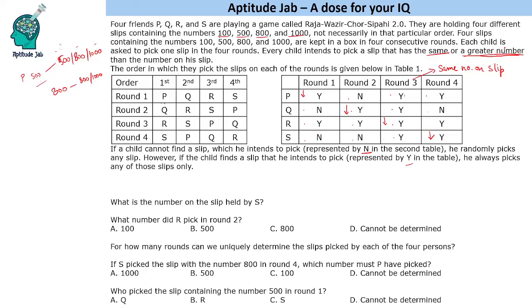Looking at R: R has Y in all rounds. Irrespective of whether R is the first, second, third, or fourth person to pick, R still gets Y in all rounds. This means R must have the least number. Logically, R's slip is 100, because no matter which slip is available, R will say yes — since any remaining slip is the same as or greater than 100. So R is 100.